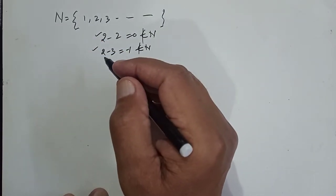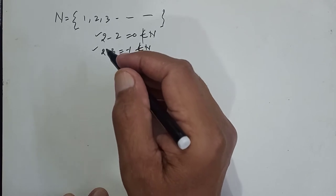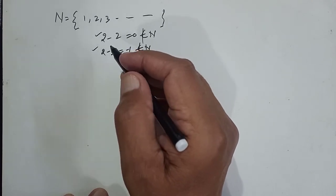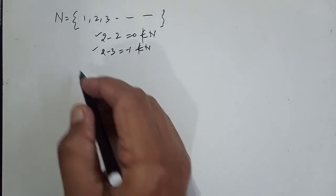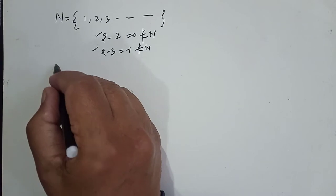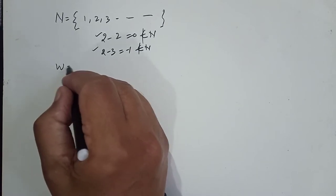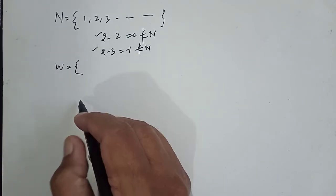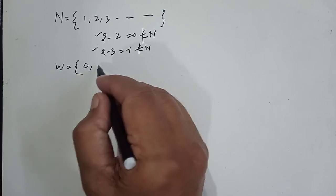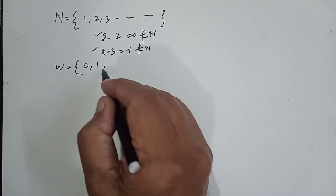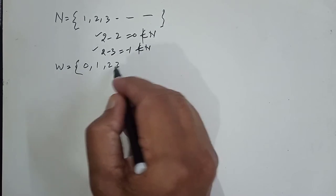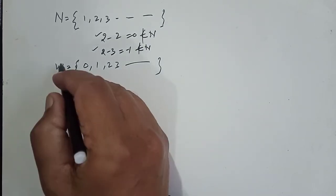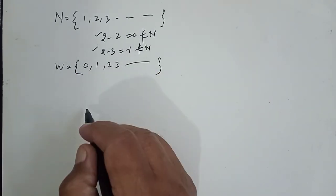In order to eradicate these deficiencies, we eradicate them one by one. First of all, we define the whole number system. We include zero: 0, 1, 2, 3, and so on, up to infinity. So this is the whole number system.